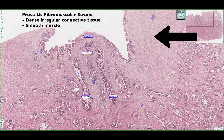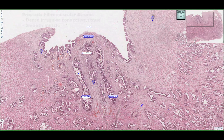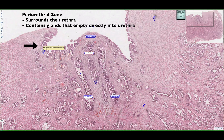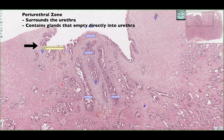This is called the fibromuscular stroma, and it surrounds mainly the anterior part of the prostate gland. Looking at other regions of the prostate, there is the periurethral zone that surrounds the urethra, and it contains a few glands.